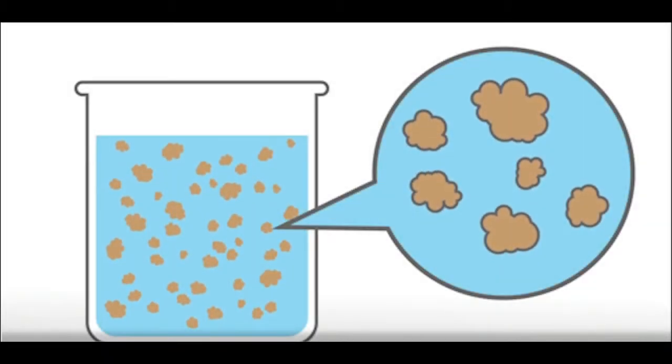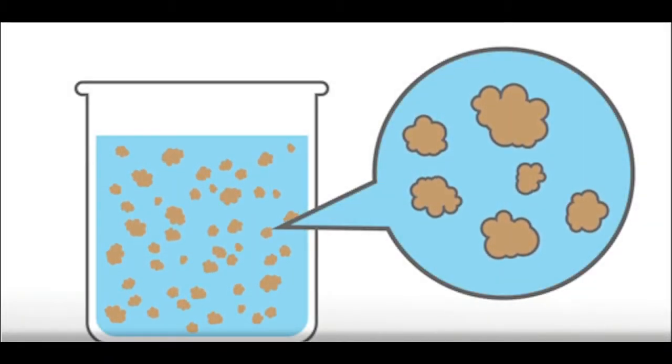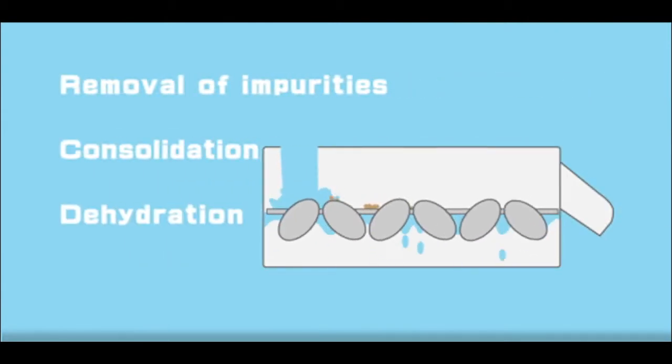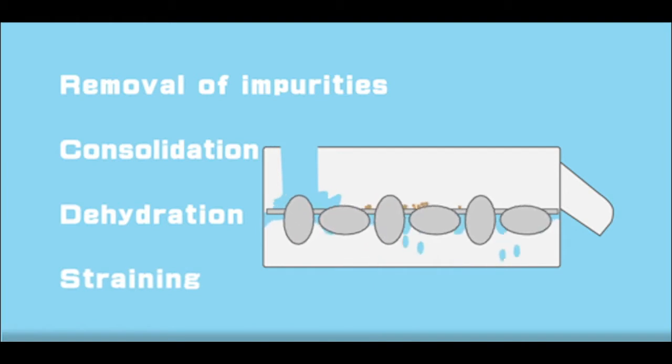The Ecologics Uplift Dewatering System, or UDS, is a solid liquid separator used mainly for the removal of impurities, consolidation, dehydration, straining, and other similar activities.